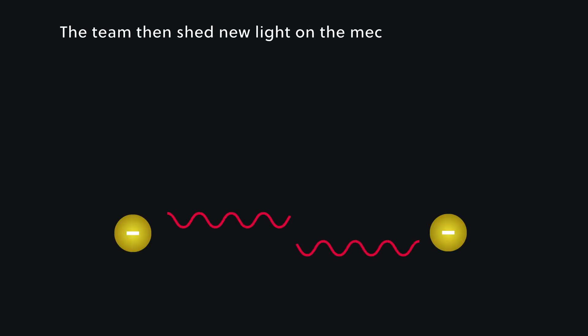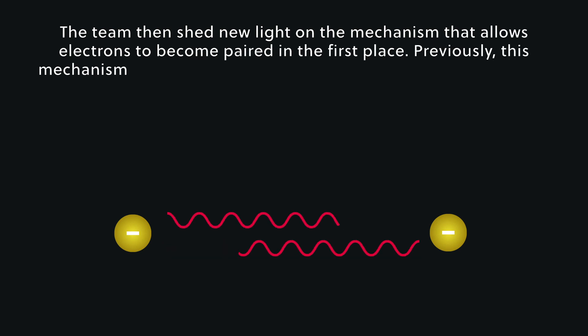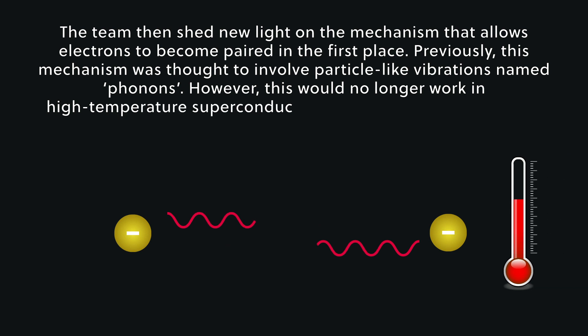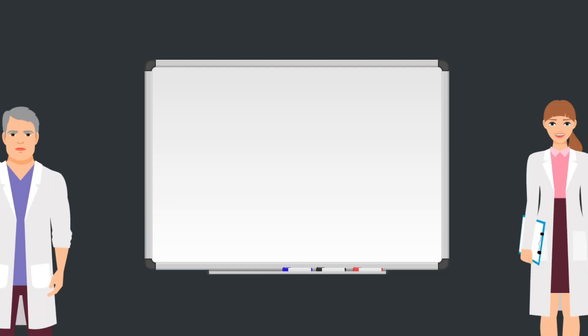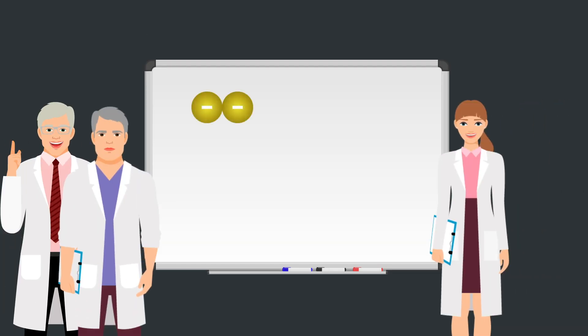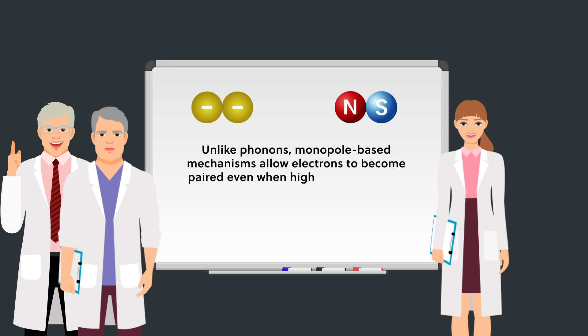The team then shed new light on the mechanism that allows electrons to become paired in the first place. Previously, this mechanism was thought to involve particle-like vibrations named phonons. However, this would no longer work in high-temperature superconductors, where pairing mechanisms would need to be far stronger. Instead, the researchers have suggested a different route to Cooper pair formation, based on the attraction provided by magnetic monopoles. Unlike phonons, monopole-based mechanisms allow electrons to become paired even when higher temperatures introduce more vibrations in the material, which would drown out individual phonons.